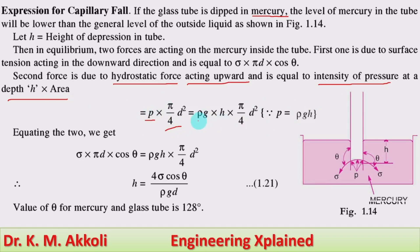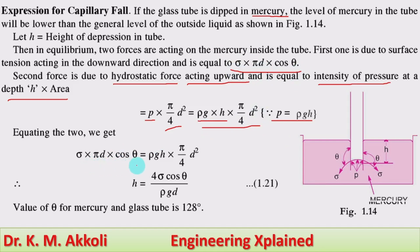The second force is the hydrostatic force acting in the upward direction, equal to the intensity of pressure at depth h multiplied by the area. The pressure p equals rho × g × h, and the area of the tube is pi/4 × d². Equating the two forces: sigma × pi × d × cos theta = rho × g × h × (pi/4) × d². Solving for h: pi and one d cancel on both sides, giving h = 4 sigma cos theta / (rho × g × d).